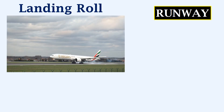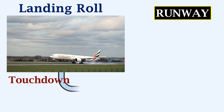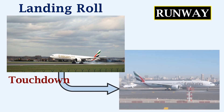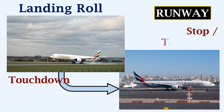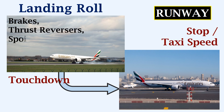Next we will look at the landing roll, which is also the aircraft's movement on the runway. This is defined as the movement of an aircraft during landing from touchdown until the aircraft stops completely or reaches its safe taxi speed. During this roll, the brakes, the thrust reversers, and the spoilers are used to reduce the aircraft's speed.